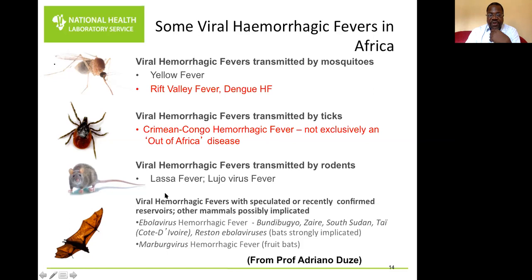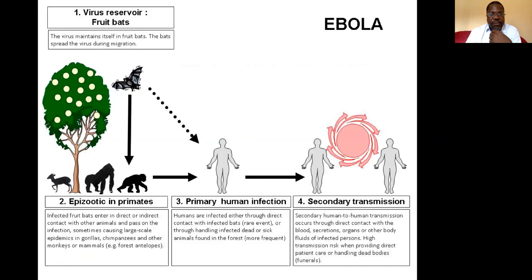We also have viral hemorrhagic fevers with speculated or recently confirmed reservoirs. For Ebola and Marburg, we initially had problems finding the true reservoirs, but now we know fruit bats are responsible. The Ebola virus maintains itself inside a fruit bat and spreads during the bat's migration.